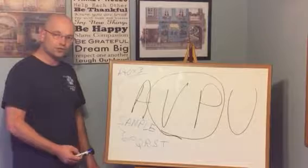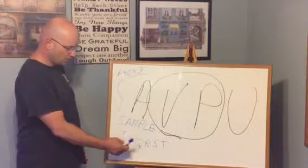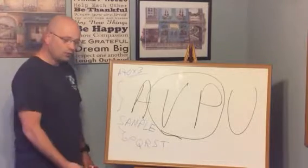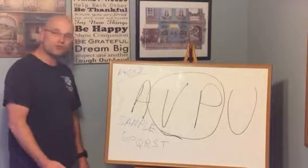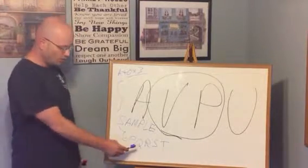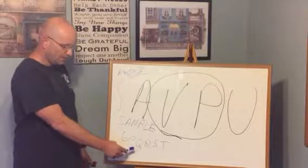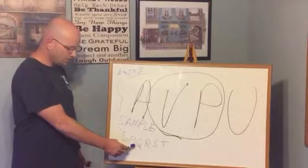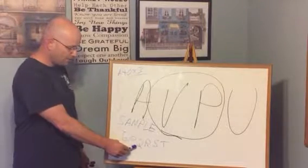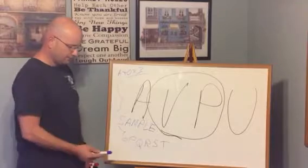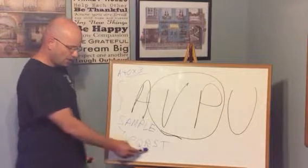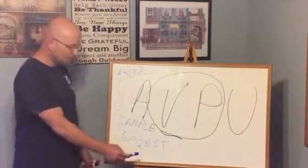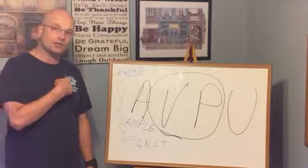Then what you want to do is say, describe it for me. Q is for quality, and the paraphrase is describe it for me — hey, describe what it feels like. Then R is for region and radiation — you're going to say, can you tell me exactly where it hurts, and does it go anywhere else?